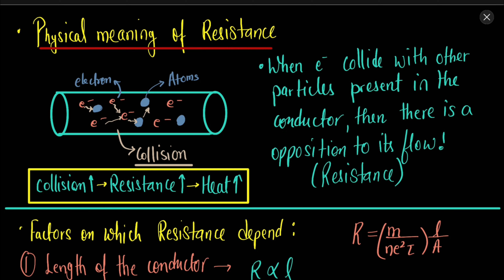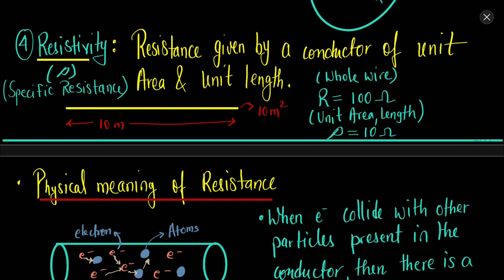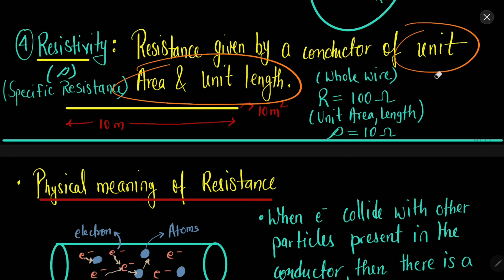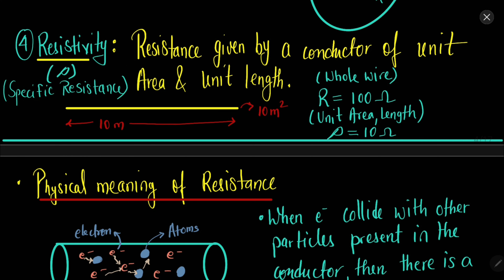Resistivity is the resistance of a conductor for a unit area and unit length. When we talk about the resistance of a 1-meter-long wire with 1-meter-square area, that opposition is called resistivity. Resistance of a unit area and unit length is called resistivity. It is represented by rho and is also called specific resistance.